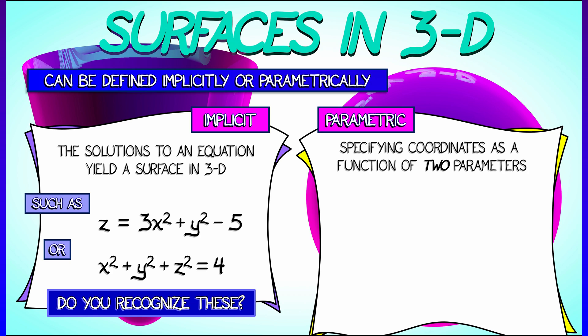For a parametric representation, we need not one parameter, but two parameters to specify a 2D surface. Something like north-south and east-west, or latitude and longitude.